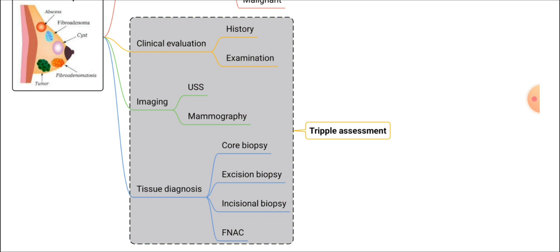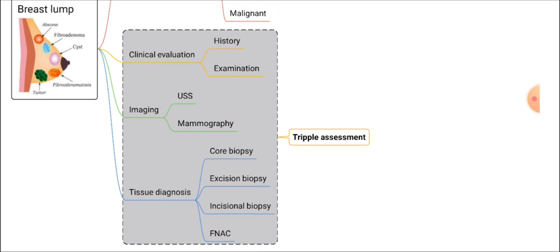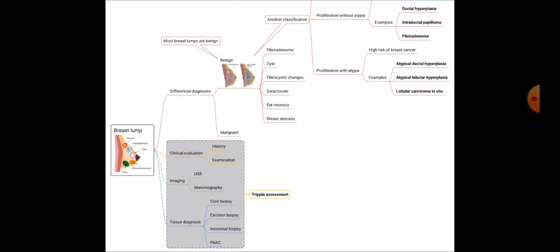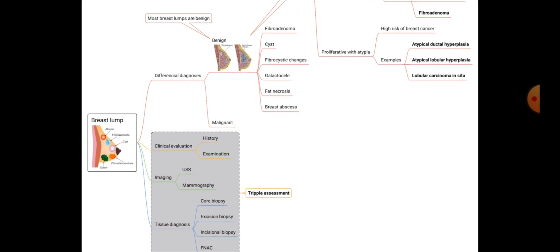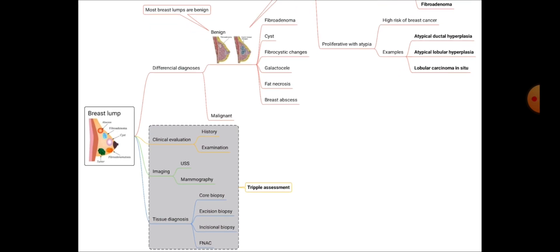Tissue diagnosis can be obtained from core biopsy, true cut biopsy, excision biopsy, or incision biopsy. FNAC also has a place for diagnosis of breast lumps. This is called the triple assessment, and the final diagnosis of a breast lump is made after the triple assessment. This is a summary of what you should know about breast lump, and we will further look at each of these breast diseases in future videos.